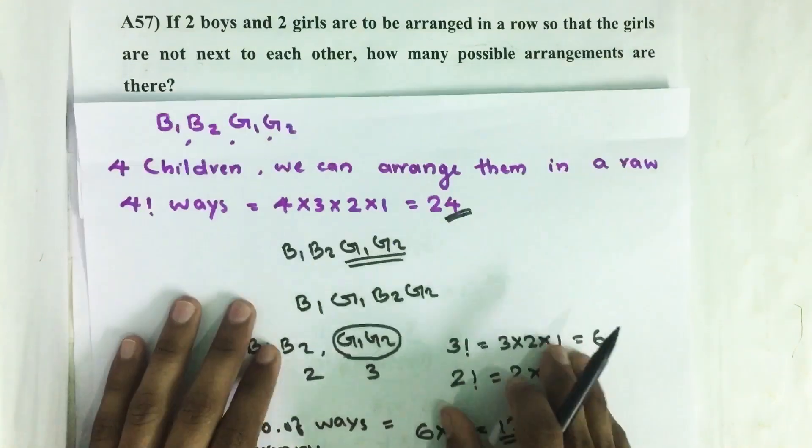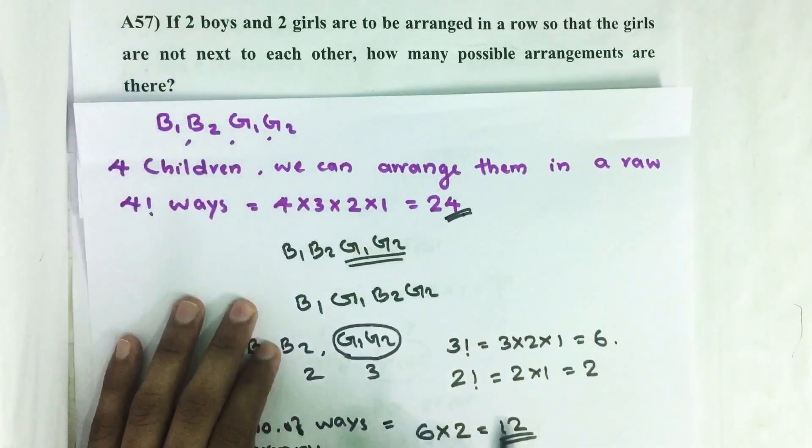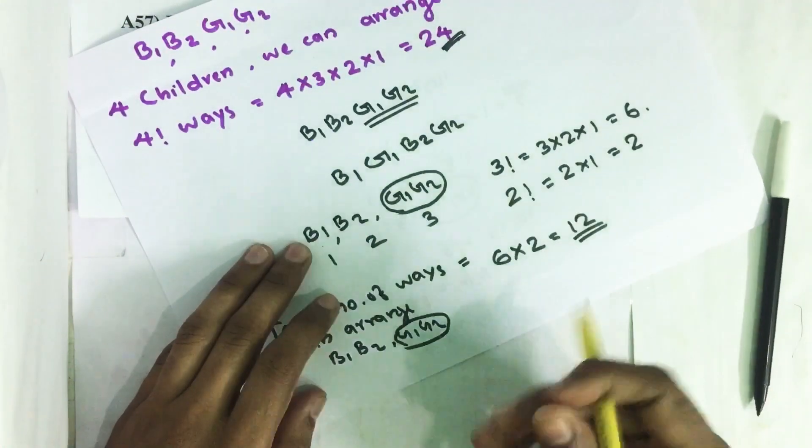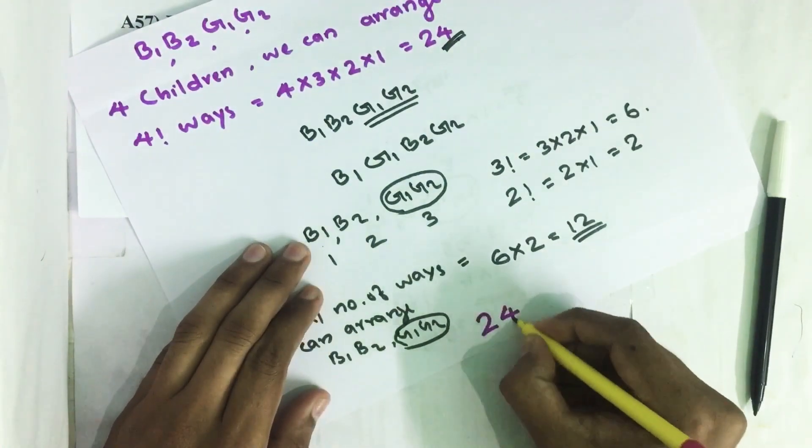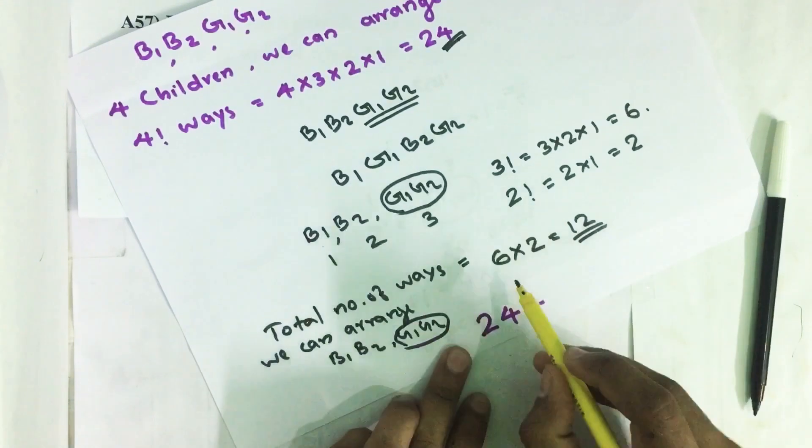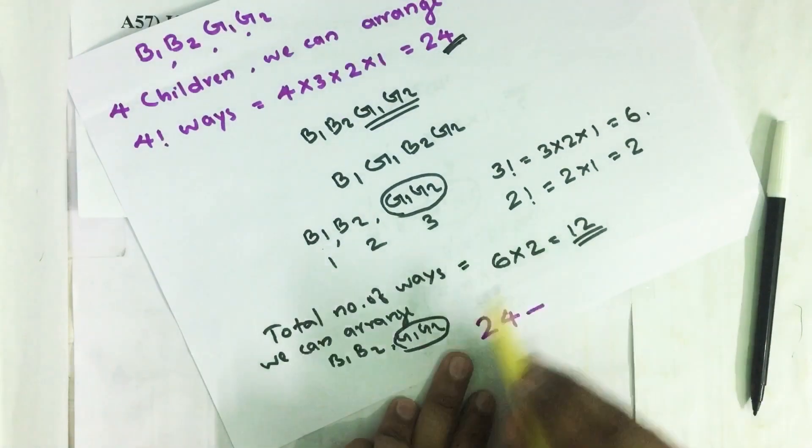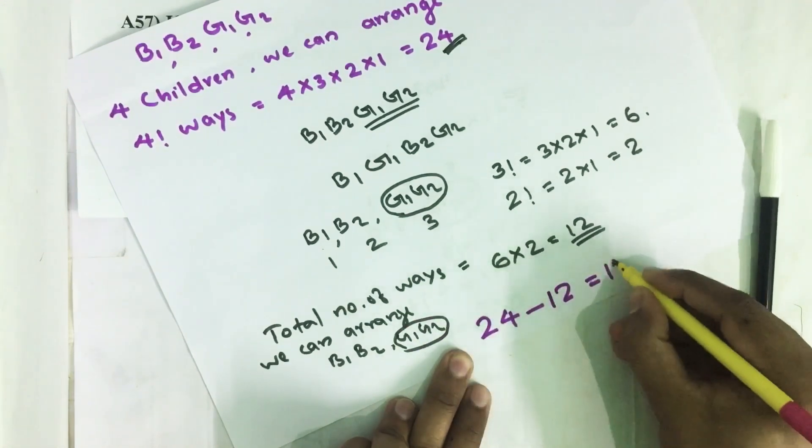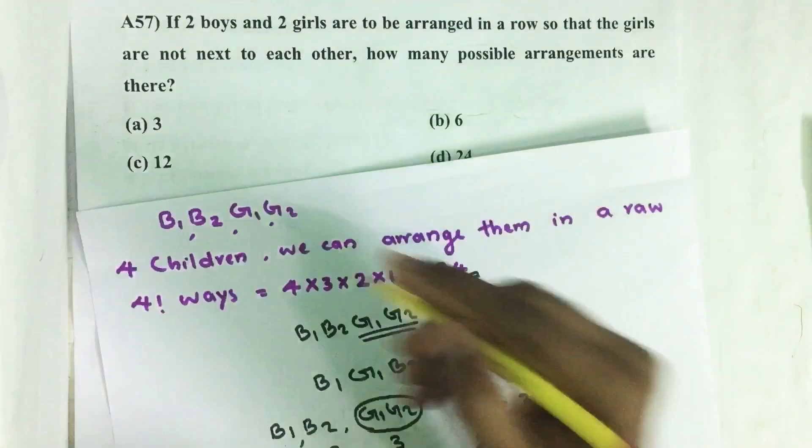So total arrangements where two girls are together. Here we have been asked how many arrangements are there where girls are not next to each other. So total arrangement equals 24 minus those arrangements where girls are next to each other, which is 12.